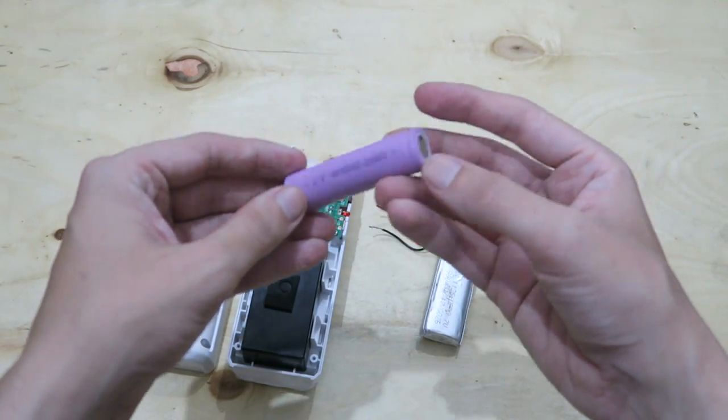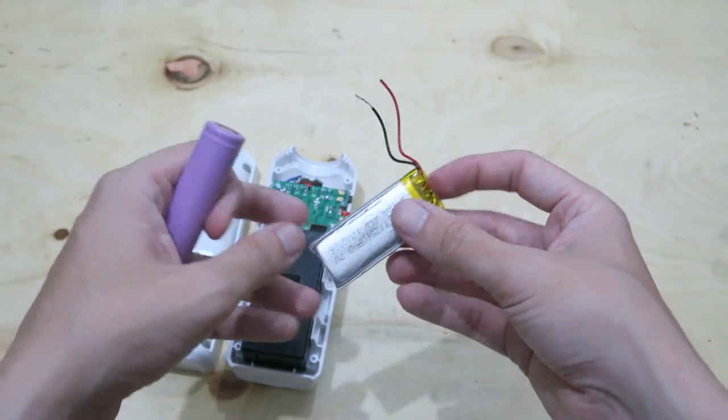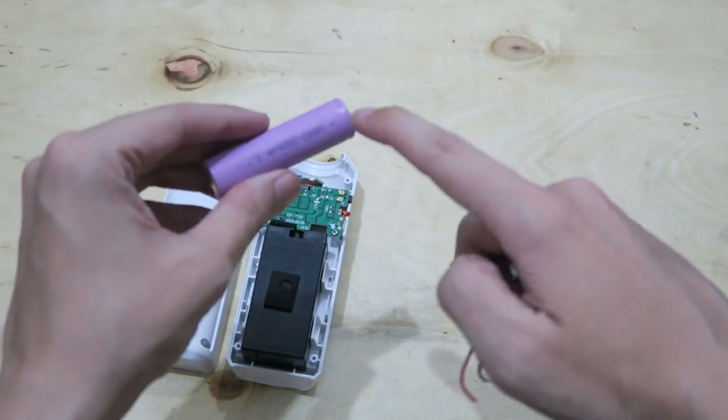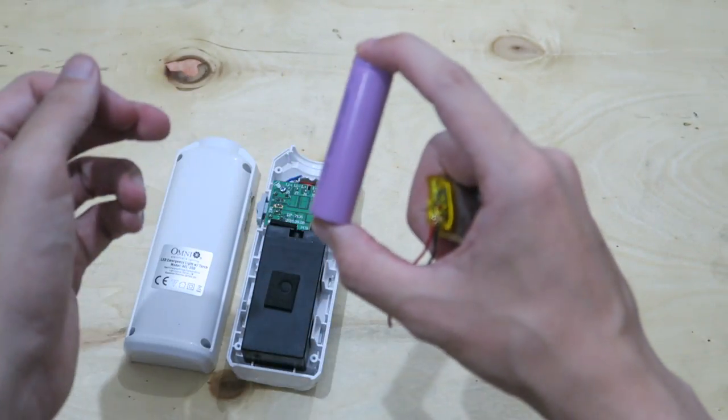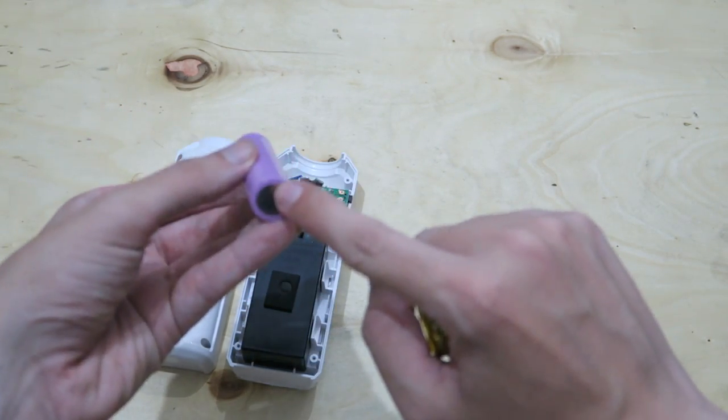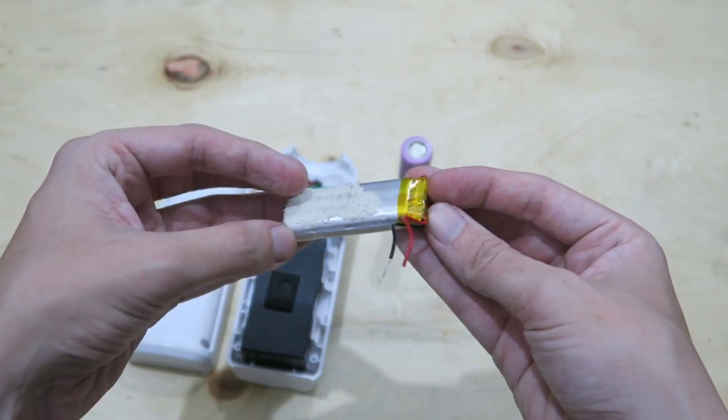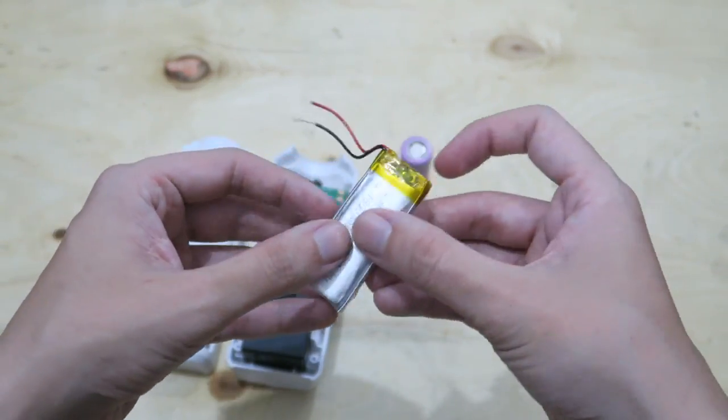Now we could go for an 18650 like this, or we can go for one of these pouch cells like this. I think I'm going to go for the pouch. Although the 18650 is higher capacity, it's going to be a little bit more difficult to put inside because you have to solder to the ends and it's a little bit awkward. So I think I'll just use this lithium pouch cell that I have here, which is 1800 milliamp hours.